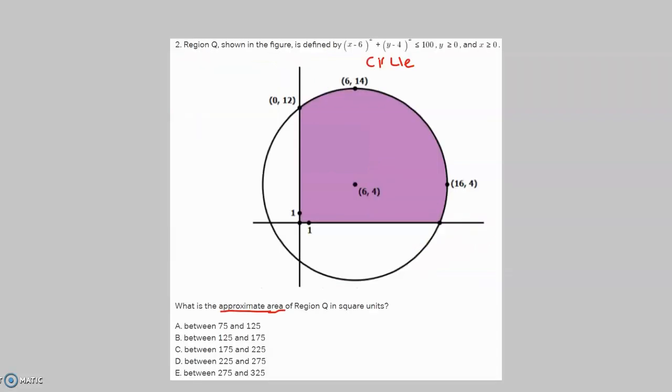If we go back to our problem, we have an approximate area and the answer choices given are very loose in some way. What this means is that they go up by 50 each time. So that means the area of region Q, they don't want us to find it within maybe two or three units.